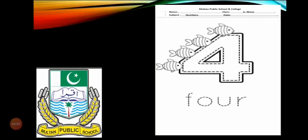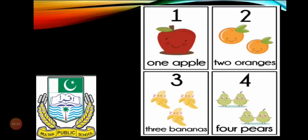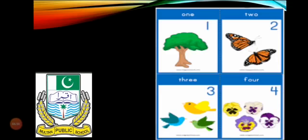My dear students, this is the number four worksheet — this is your home task. You have to trace number four, count and color these objects. Let's differentiate the numbers according to the objects: one apple; one, two — two oranges; one, two, three — three bananas; one, two, three, four — four pears; one, two — two butterflies; one, two, three — three birds; one, two, three, four — four flowers.